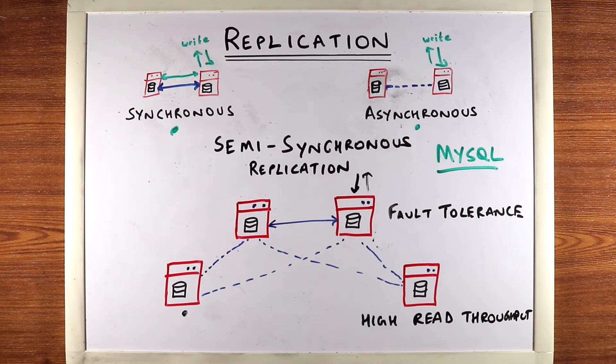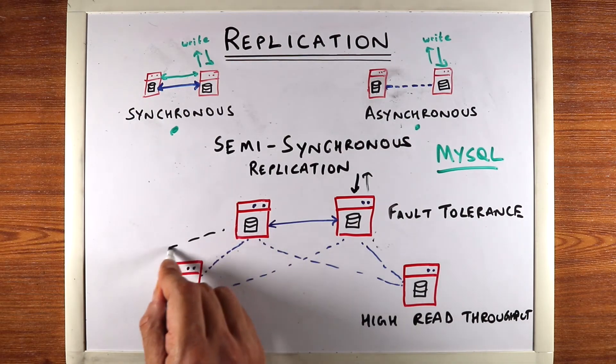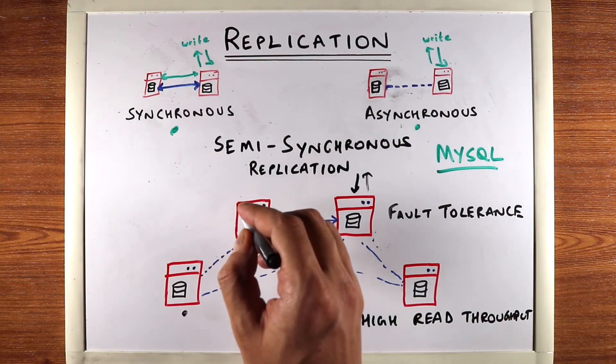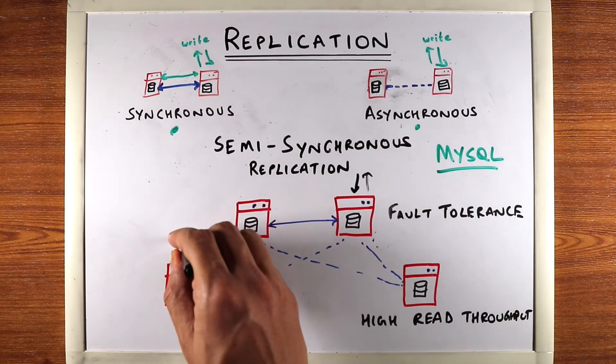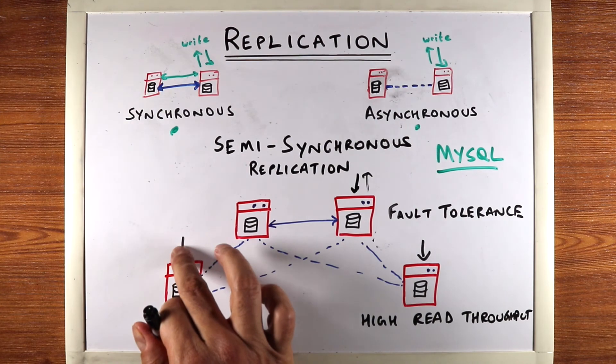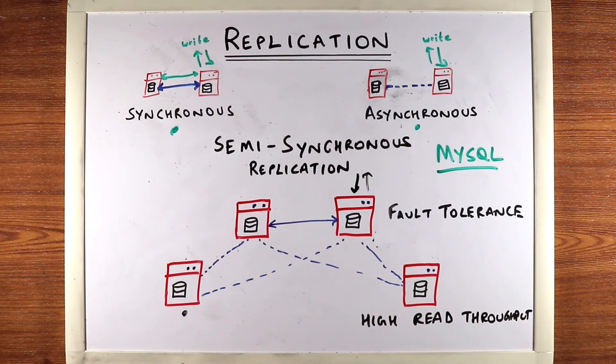Then you can keep adding more asynchronous replicas and handle more reads. Keep in mind that the consistency will still be eventual here because there will be a lag when you replicate to these machines. So these machines might have slightly out-of-date data, and this doesn't solve the consistency problem. It's only suitable for data where eventual consistency is okay.